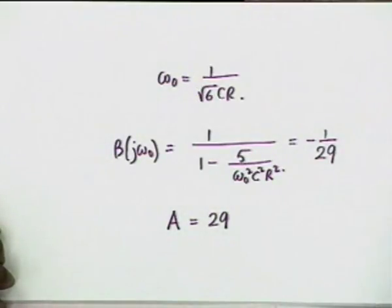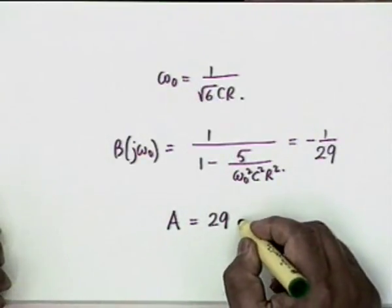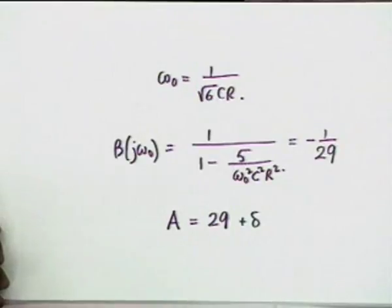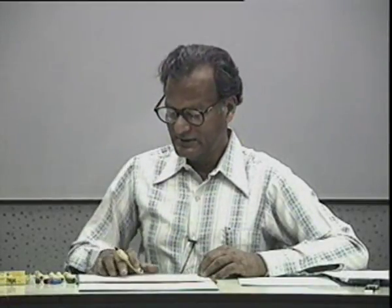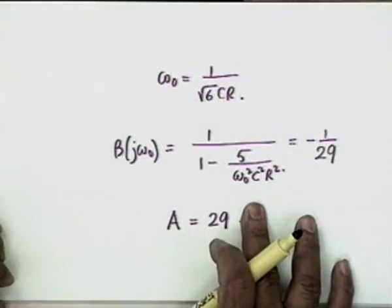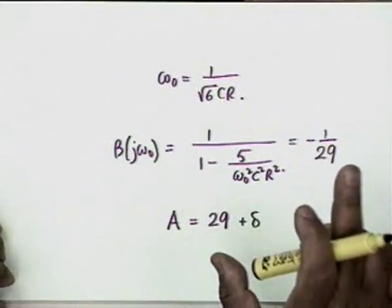To start the oscillations, a gain of exactly 29 does not suffice — you have to make it slightly greater than 29, otherwise the circuit sits on the borderline and may oscillate intermittently. You have to make it slightly greater than 29 at the cost of slight distortion in the generated waveform, since A = 29 satisfies the Barkhausen criterion exactly. If A = 29 + δ, you might also generate harmonics due to the non-linearity that comes into effect.